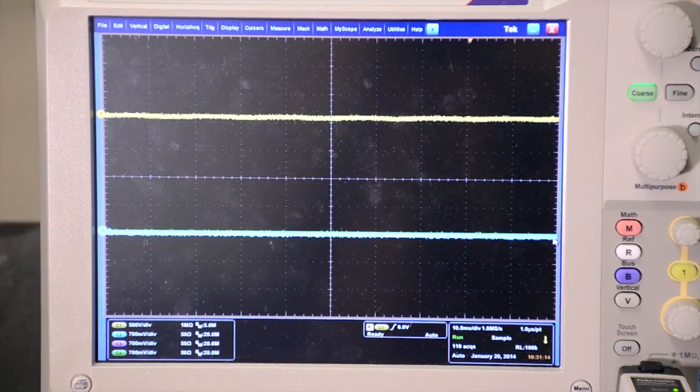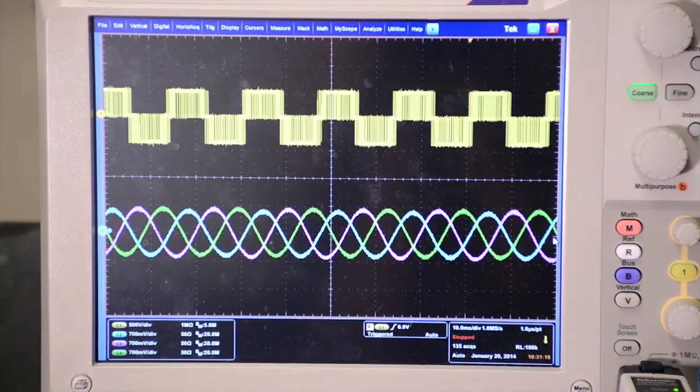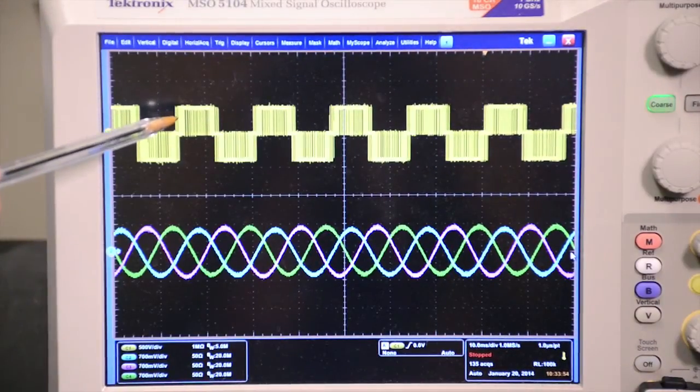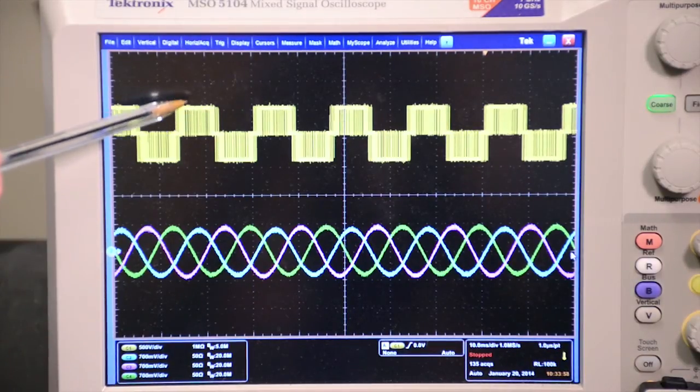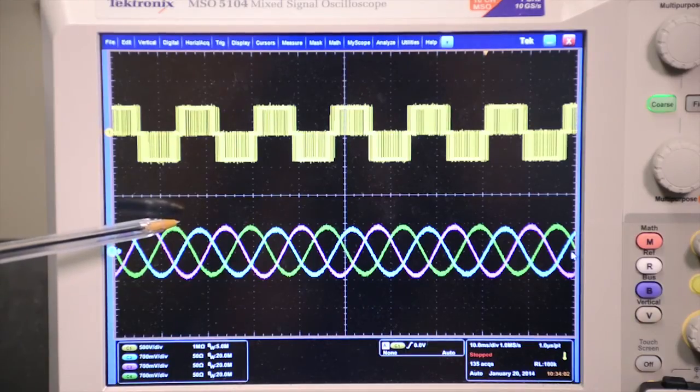The first experiment on this 3-level neutral point clamp converter shows the basic operation of this converter function. This yellow waveform is the 3-level output voltage for phase A phase to neutral, and these sinusoidal waveforms are the grid current in line frequency.